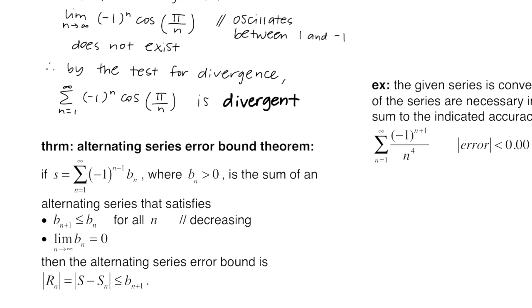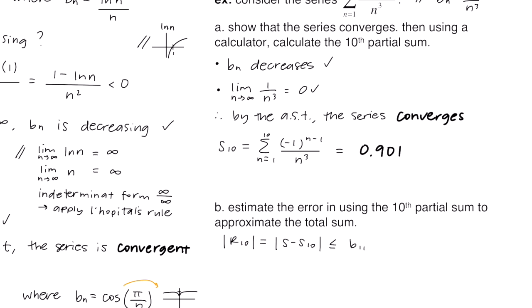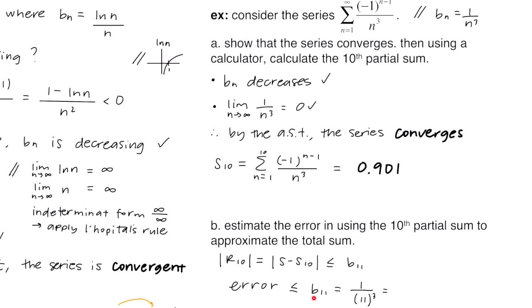Part B says estimate the error in using the 10th partial sum to approximate the total sum. Since n equals 10, the error r sub 10 equals s minus s sub 10 and this is less than or equal to b sub 11, the next term of the alternating series. The absolute value of r sub 10 is less than or equal to b sub 11, where b sub 11 is 1 over 11 cubed. So by using the 10th partial sum to estimate the total sum, the error is at most 0.000751.